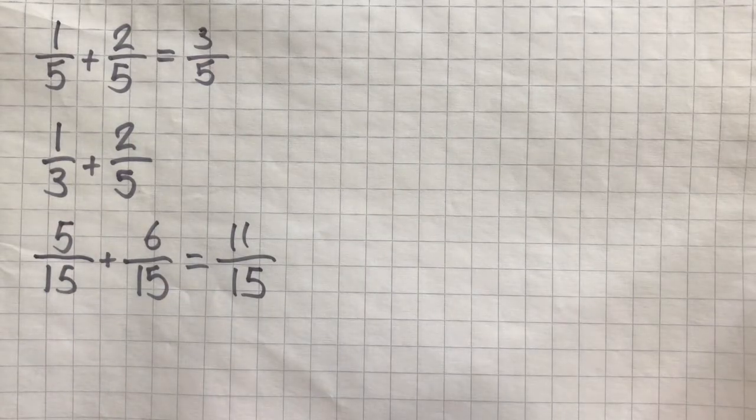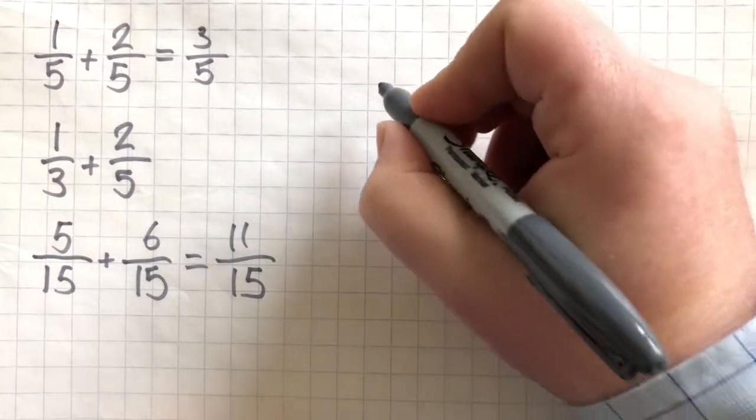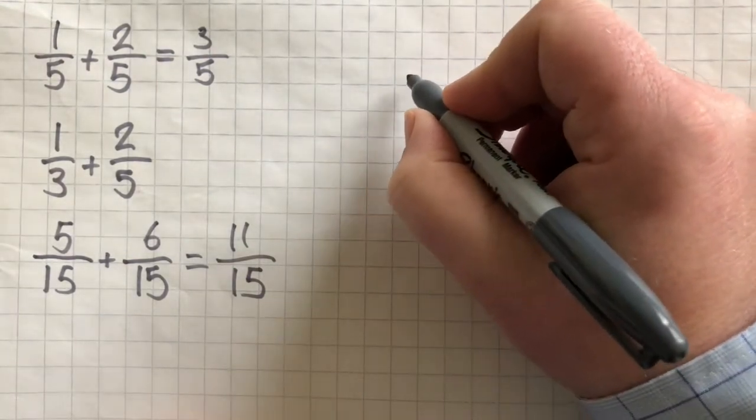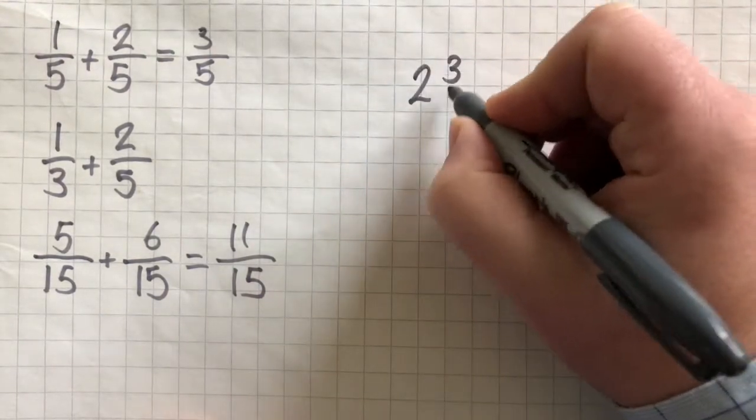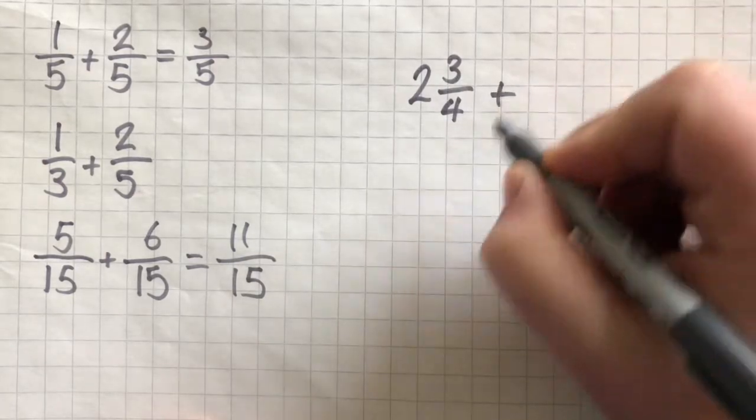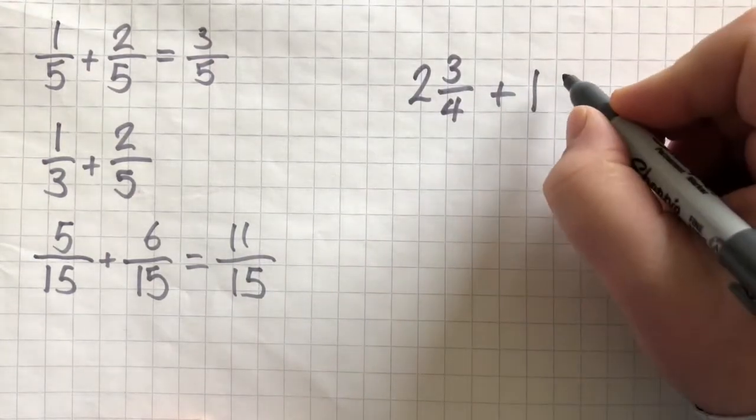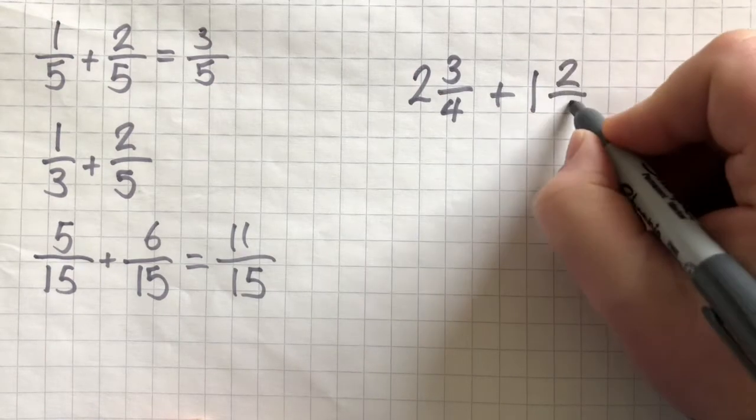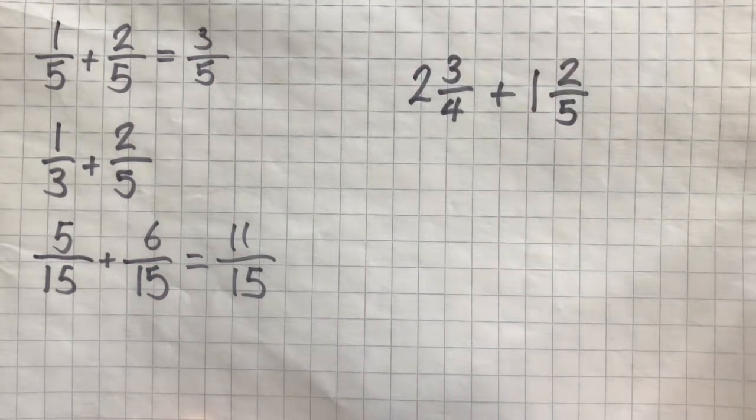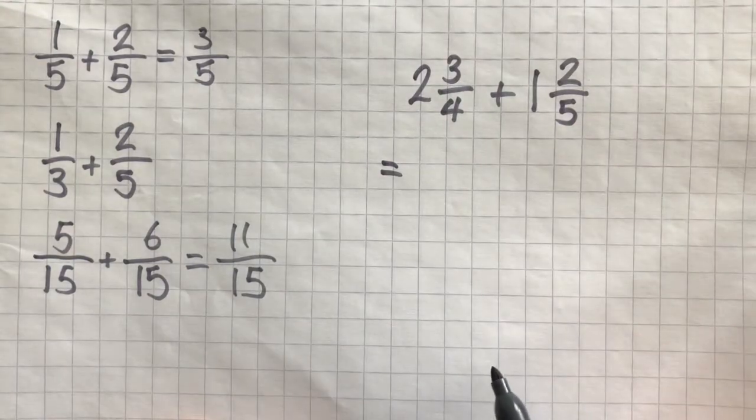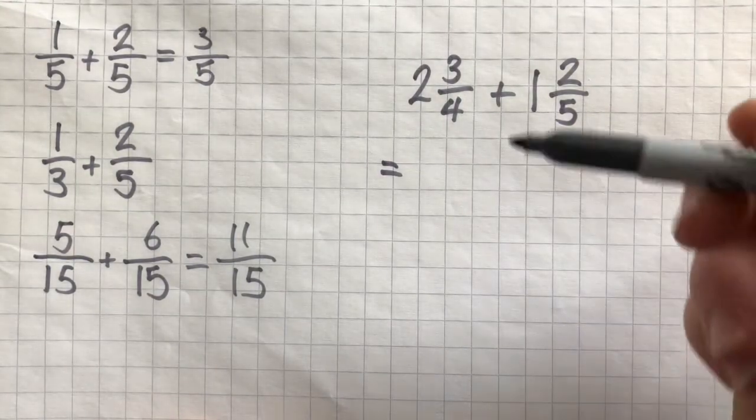The most challenging type of these questions is when you are asked to add two mixed numbers together. For example, in this question, we have 2 and 3 quarters plus 1 and 2 fifths. First of all, we need to convert these to top-heavy or improper fractions.